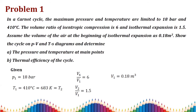Problem number one: In a Carnot cycle the maximum pressure and temperature are limited to 18 bar. So the maximum pressure is p1 = 18 bar and temperature t1 = 410 degrees Celsius.